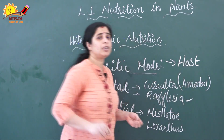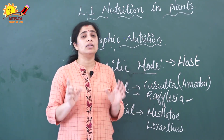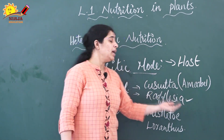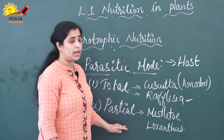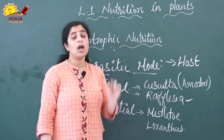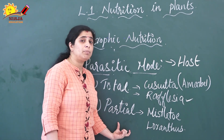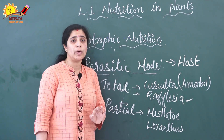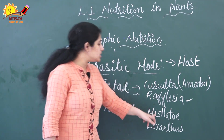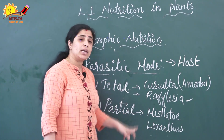Have you heard about the Rafflesia flower? It is the largest flower in the world. Next, in partial parasitic plants, photosynthesis does occur, but they derive water and minerals from the host plants. Examples of partial parasitic plants are Mistletoe and Loranthus.